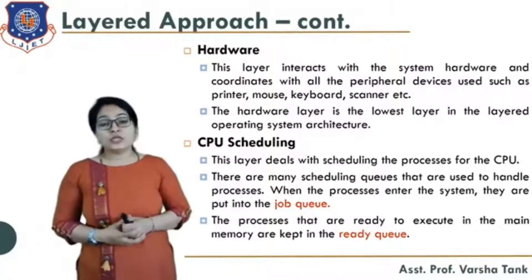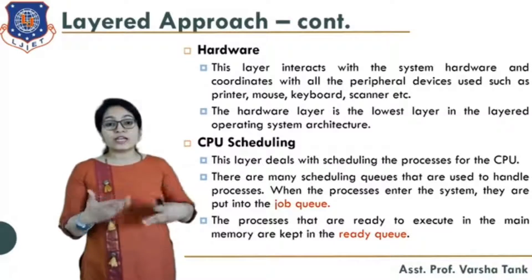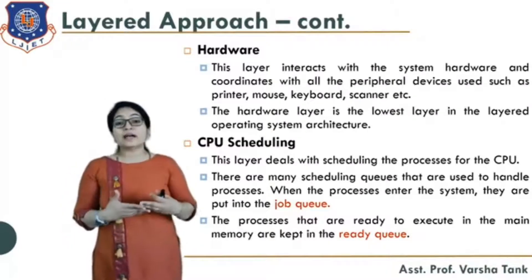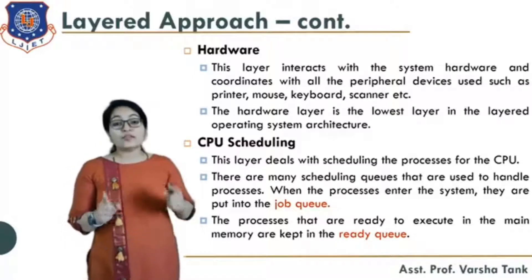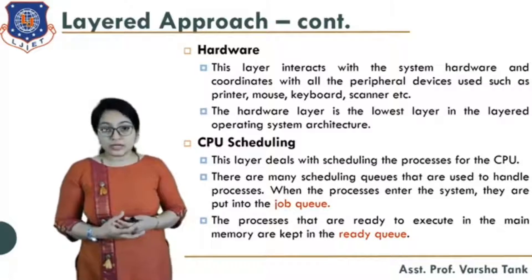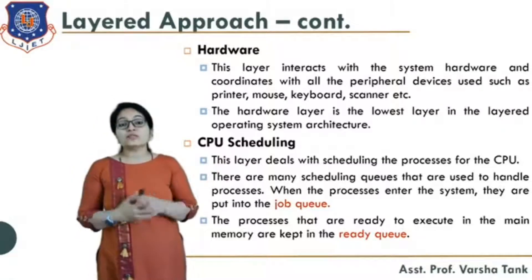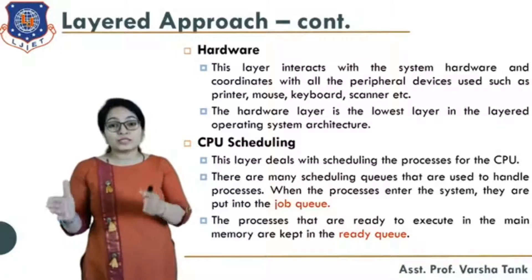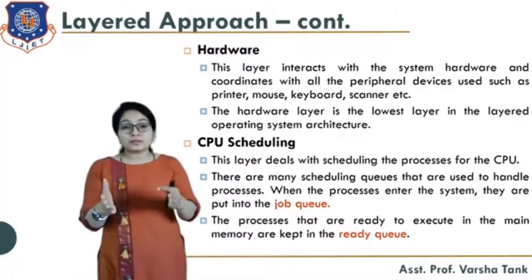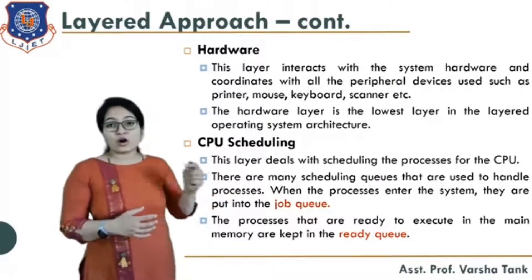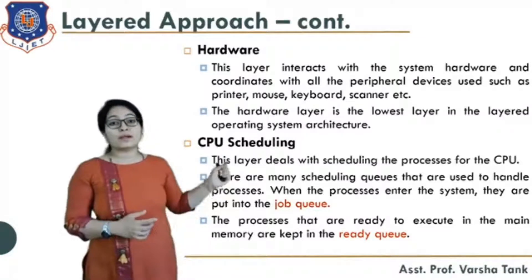Next is CPU scheduling. This layer deals with the scheduling of processes. There are many processes running in your computer system, and we have to arrange them — which process will go for execution, which will wait, and which is in the job queue. There are two types of queues: job queue, where the process is placed when it enters the system, and ready queue, where the process is kept when it is ready for execution.